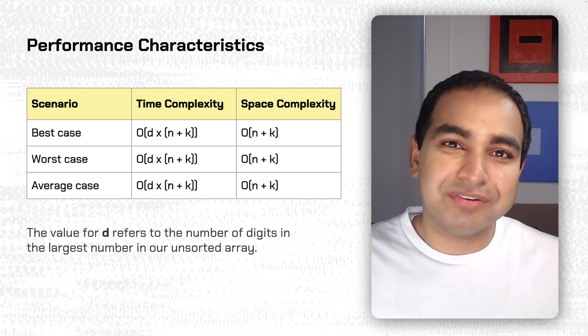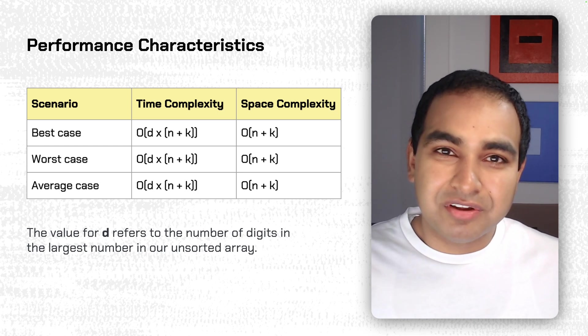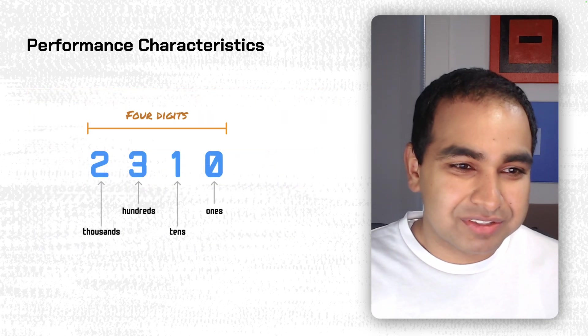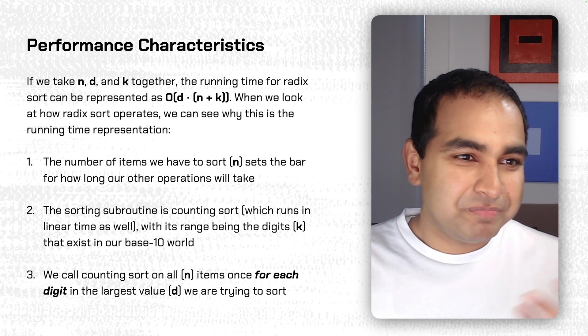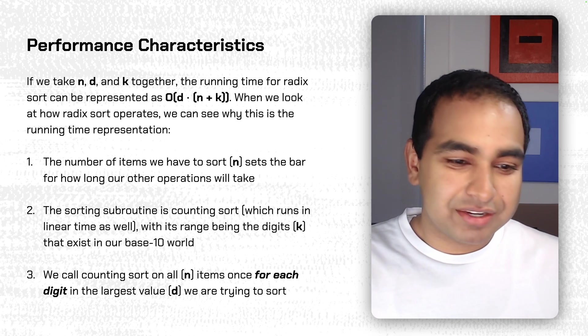It doesn't care anymore about the range of numbers from smallest to largest. Those are all completely ignored. And so if you put it all together, when we go back to the N, D, and K, you'll see that the performance is quite nice.